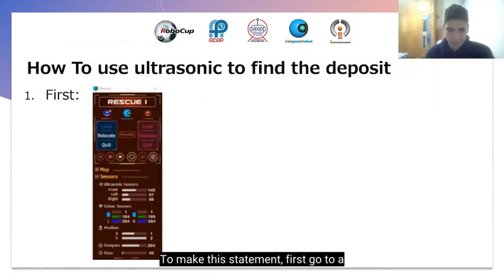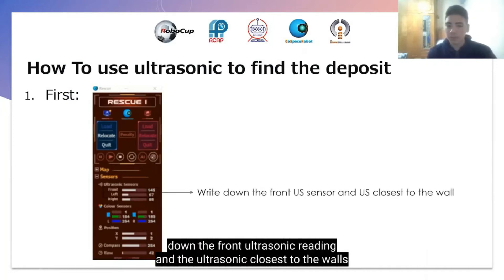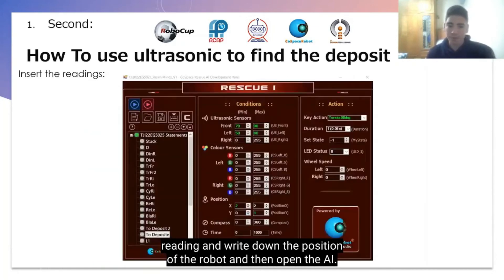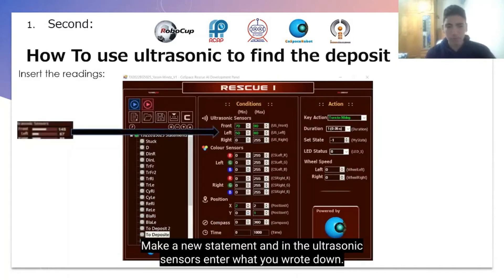To make this statement, first go to a position near the deposit, then write down the front ultrasonic's reading and the ultrasonic closest to the wall's reading, and write down the position of the robot. Then open the AI, make a new statement, and in the ultrasonic sensors, enter what you wrote down.